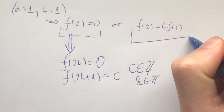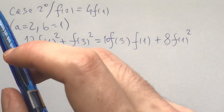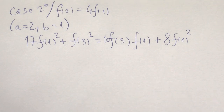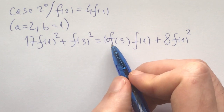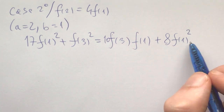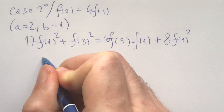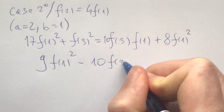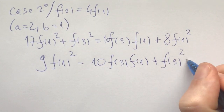Now let's move on to the case f(2) = 4·f(1). The first thing to plug in is a = 2, b = 1, building on the a = b = 1 case. What we get is 17f(1)² + f(3)² = 10·f(3)·f(1) + 8f(1)². Moving everything to one side: 9f(1)² − 10·f(3)·f(1) + f(3)² = 0.